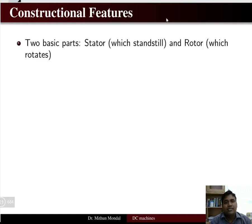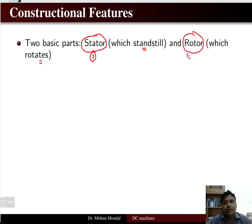Welcome to the next lecture of electrical machines. We were discussing the DC machine and today we are going to discuss the construction of the DC machine and its constructional features. Any DC machine has two basic parts: one is the stator, which is standstill, and the second is the rotor, which is rotating.